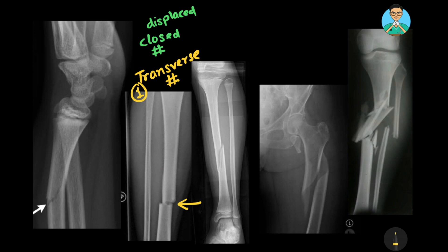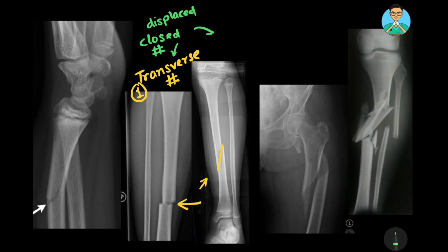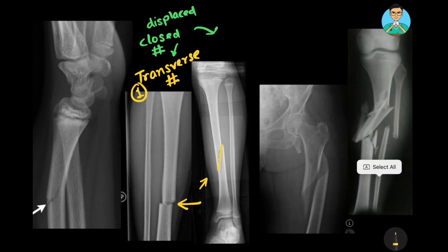Now let us come to type two. In this X-ray, you can make out that the fracture line is oblique. The direction of the force was also oblique. This fracture is also displaced and closed, and it is known as an oblique fracture.